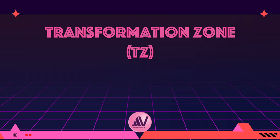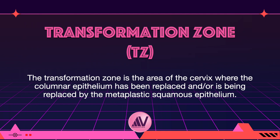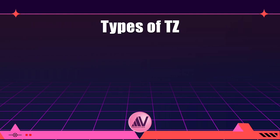The transformation zone is the area of the cervix where the columnar epithelium has been replaced and/or is being replaced by metaplastic squamous epithelium — in other words, the area between the original squamo-columnar junction and the current one. In premenopausal women, the transformation zone is primarily located on the ectocervix. After menopause, the cervix shrinks due to decreasing estrogen levels, and consequently the transformation zone may move partially and later fully into the endocervical canal. For defining the transformation zone, the upper limit — the proximal extent — is the most crucial feature to identify, and transformation zones are classified based on this.